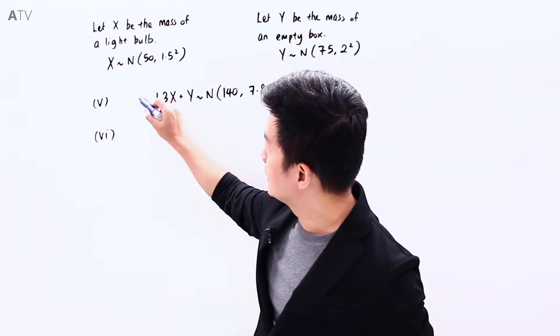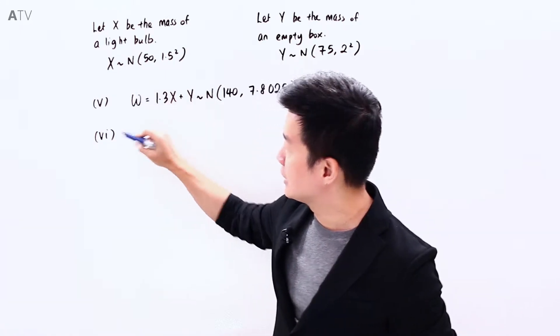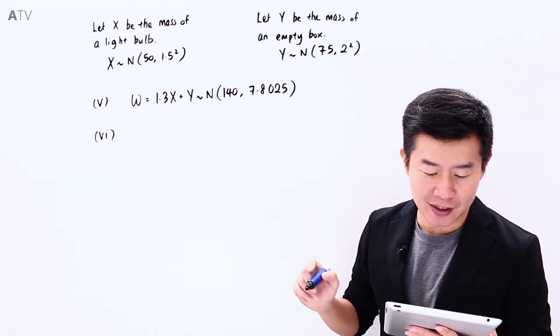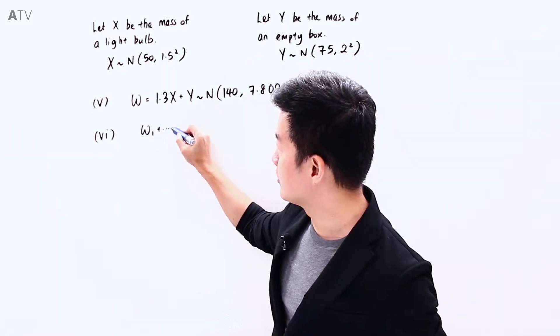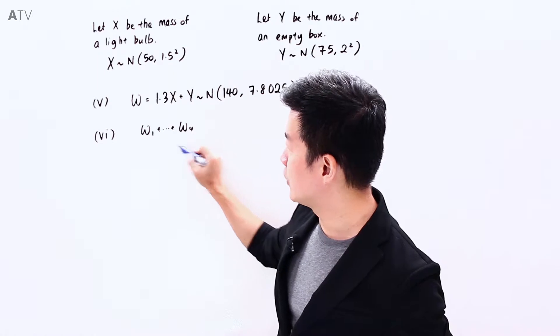I'm going to call this as W, and in this part of the question, we are looking at the total of 4 Ws. So we are looking at W1 plus W2 all the way until W4.